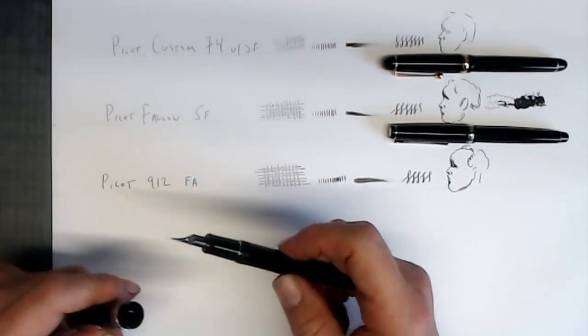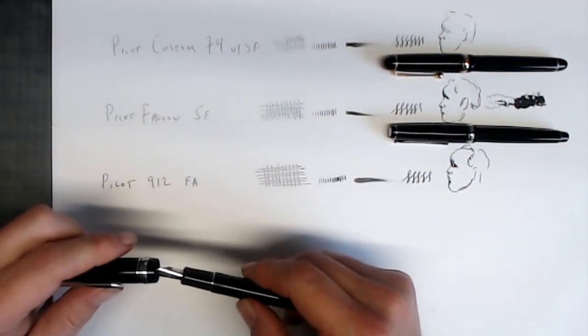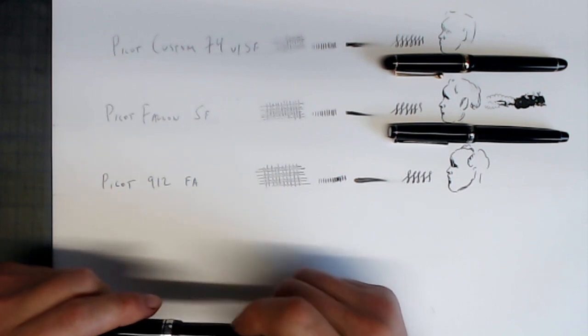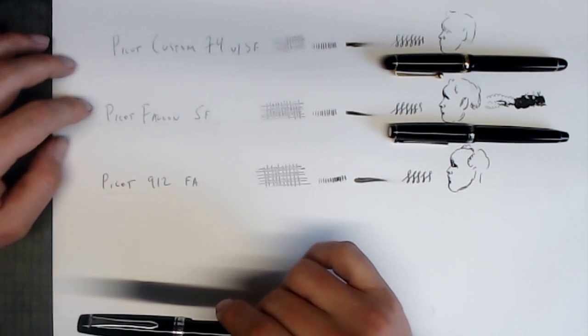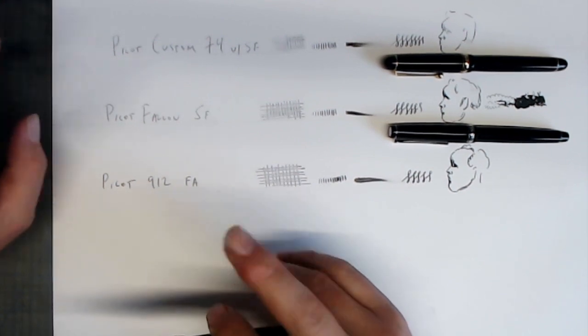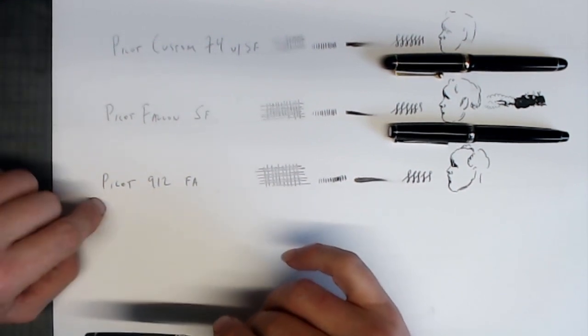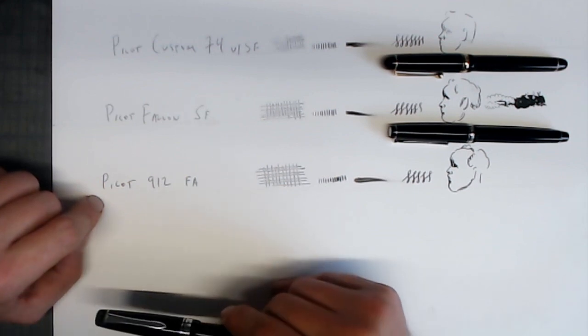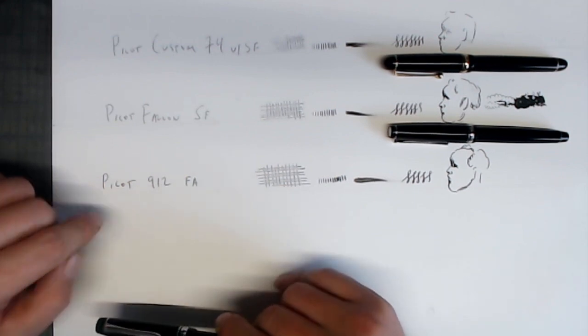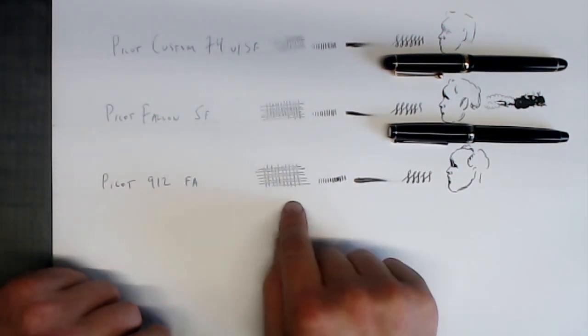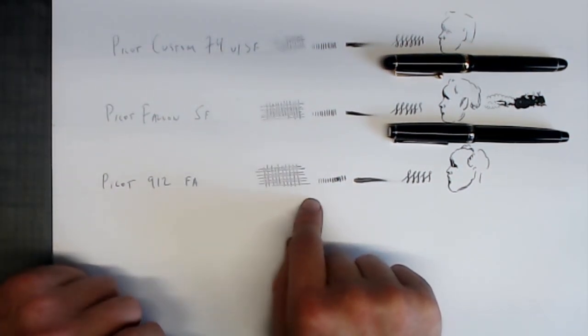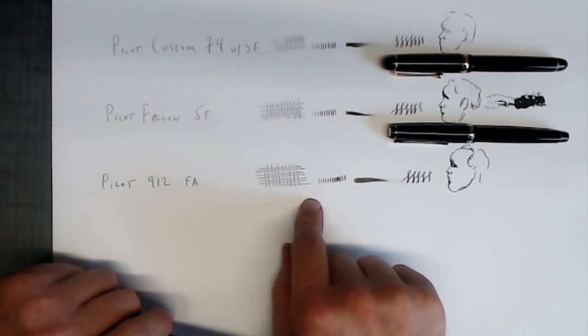Okay, so overall, how does this pen compare with the Falcon and the Custom 74? Well, it flexes much wetter. It flexes much more than either of these two pens. So whereas these might be considered bouncy or soft nibs, this is a true flex. It's much wetter than these two pens. You can see the line thickness is much thicker, considerably thicker than the other two pens.